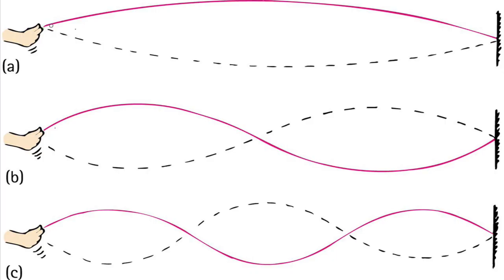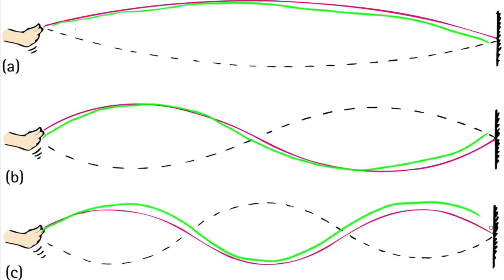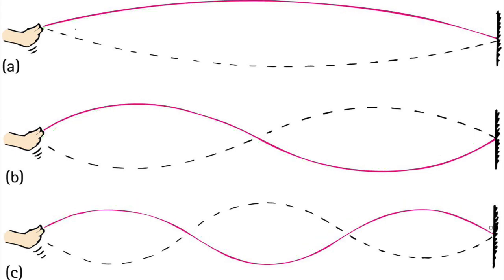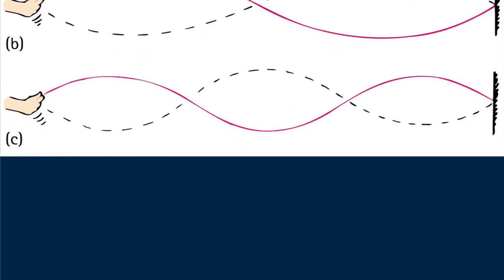Here Wilma shakes the rope until she sets up a standing wave of one segment. When she shakes with twice the frequency, she produces a wave with two segments. This is a standing wave of one wavelength. When Wilma shakes with three times the frequency, she produces three segments. The standing wave she creates is of one and a half wavelengths.